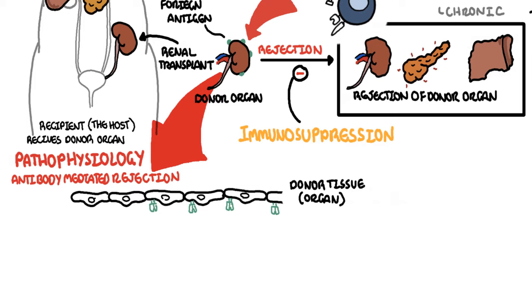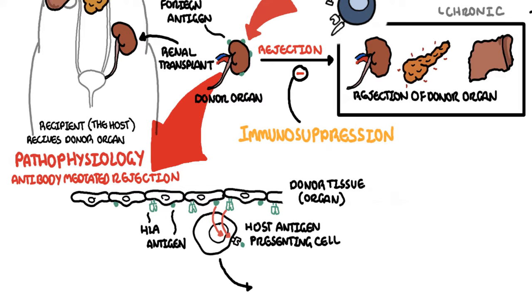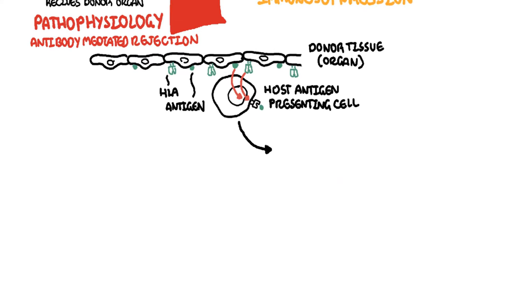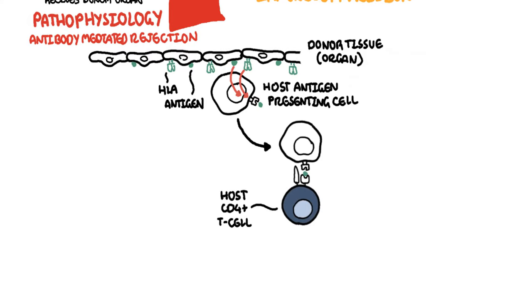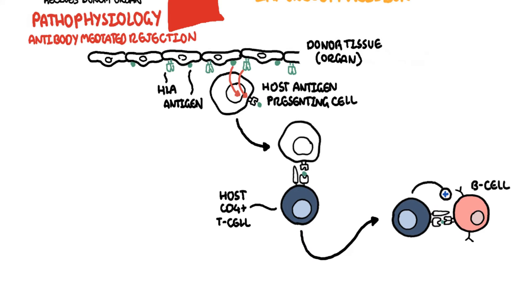Each and every individual has a unique tag or code. This donor tissue or organ contains unique human leukocyte antigen, HLA, as well as any other antigen. When it comes in contact with the host's immune system, the host's antigen presenting cells will recognize the tissue as foreign. It engulfs the tissue and their antigen and presents the foreign antigen to the host's CD4 T-cells, also known as the T-helper cells. The antigen presenting cell activates the T-helper cells, which in turn will activate B-cells to become plasma cells.